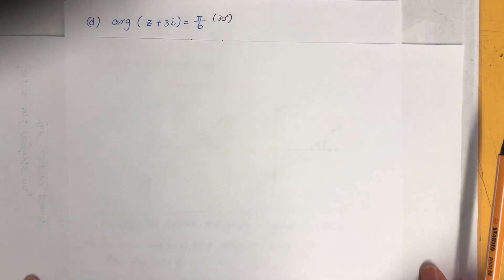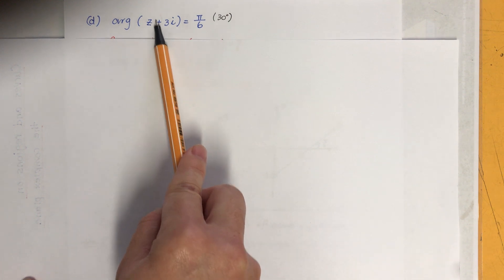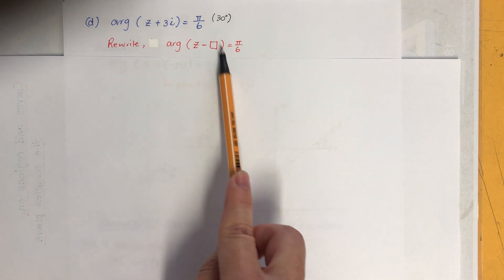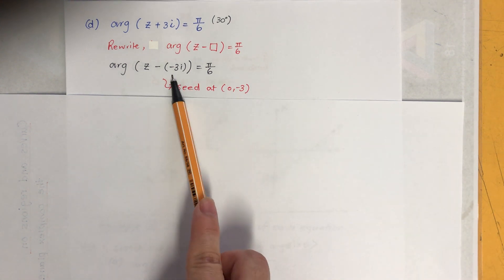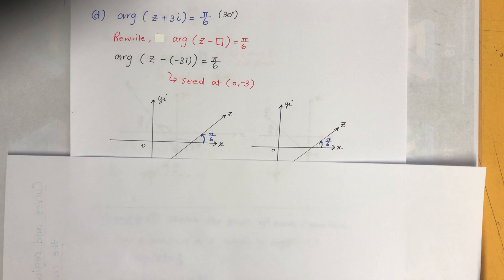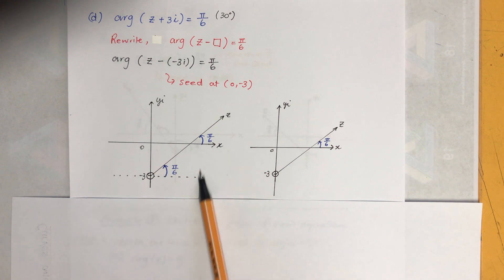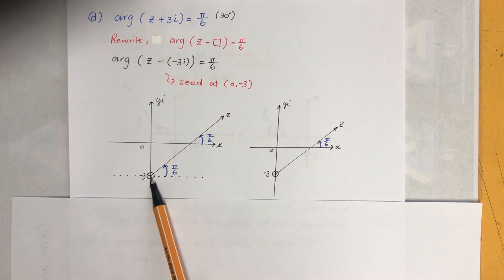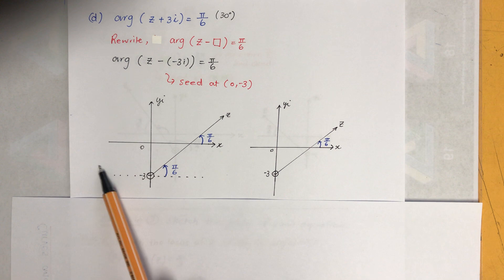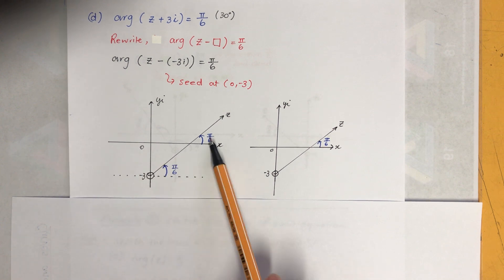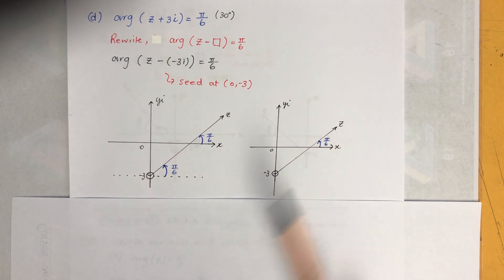The next one looks normal but we can't immediately find the seed. To find the seed we need to write it in the form z minus something, so I'll rewrite it. The seed is at (0, -3). I draw a dotted line parallel to the x-axis at that starting point, then go up from there π/6 which is 30 degrees — corresponding angles confirm it's parallel.